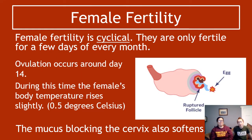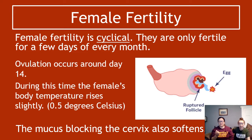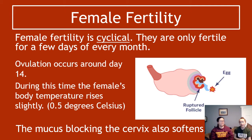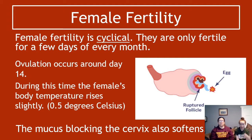Female fertility is cyclical — one ovum is released every month. Sometimes it's not one, sometimes there are two, but generally it's one ovum once a month. Ovulation occurs around day 14; the ovum is released into the oviduct, and that is where it is likely to meet a sperm. If you want to get pregnant, fertilization must occur there.